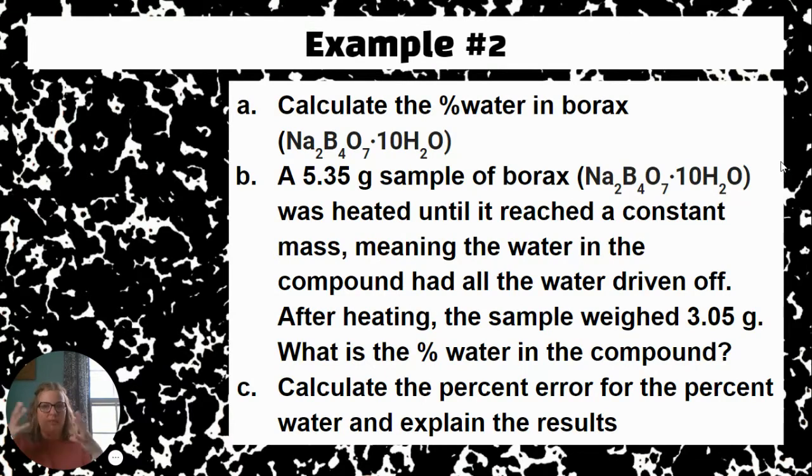Your second example is even bigger. For A, it says to calculate the percent of water in borax. So the chemical formula for borax is given here. You need to calculate the percent. For B, a 5.35 gram sample of borax is heated until it reached a constant mass, meaning the water in the compound had all been driven off. What happens is in hydrated compounds, sometimes if you don't heat them intensely all the way, you will end up not getting all the water out. So they actually recommend heating it to a constant mass or heating it and cooling it three different times, okay?